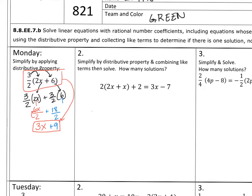Number 2 says simplify by distributive property, so that just means I'm going to end up distributing a number by multiplying. And combining like terms, then solve. And then it asks, how many solutions? We're going to take notes on that today to define how do we know how many solutions it has. We're going to figure out what that means. It's very simple.